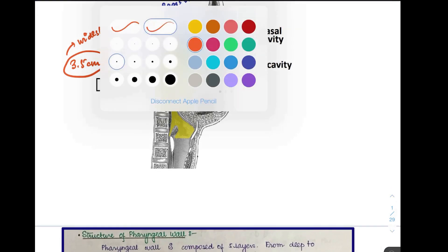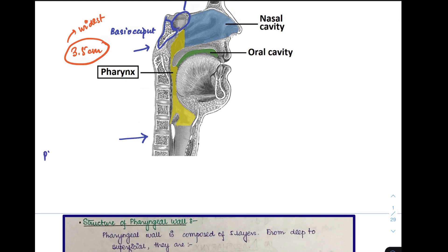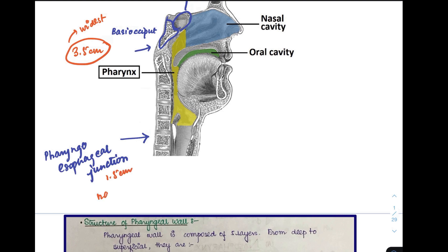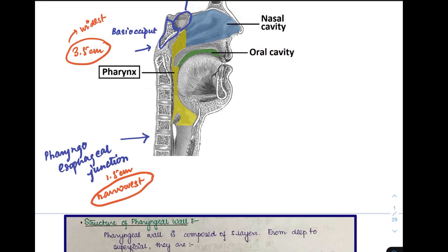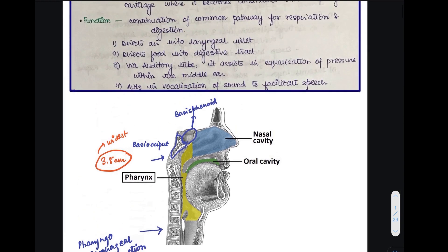The narrowest part of the pharynx is at its lower limit, which is the level of the cricoid cartilage, corresponding to the sixth cervical vertebra. At this level, we call it the pharyngoesophageal junction. The pharynx is narrowest here at about 1.5 centimetres. In summary, the pharynx is widest at the skull base at 3.5 centimetres, and narrowest at the pharyngoesophageal junction at 1.5 centimetres.